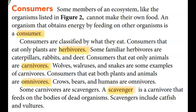Next up, we have consumers. Some members of an ecosystem cannot make their own food. An organism that obtains energy by feeding on other organisms is a consumer. Consumers are classified by what they eat. Consumers that eat only plants are herbivores — some familiar herbivores are caterpillars, rabbits, and deer. Consumers that eat only animals are carnivores — wolves, walruses, and snakes are examples. Consumers that eat both plants and animals are omnivores — crows, bears, and humans are omnivores. Some carnivores are scavengers — a scavenger is a carnivore that feeds on the bodies of dead organisms, such as catfish and vultures.